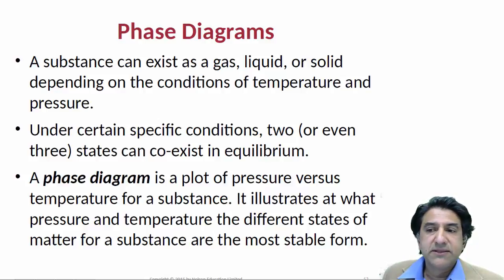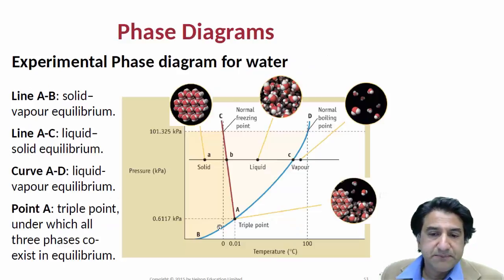So we really need to have a look at an example of this, and here it is for water. So here's pressure versus temperature, and immediately you can see a kind of map, and there are lines. Here's the solid region over here. Why is this solid? Because it's at low temperature and high pressure.